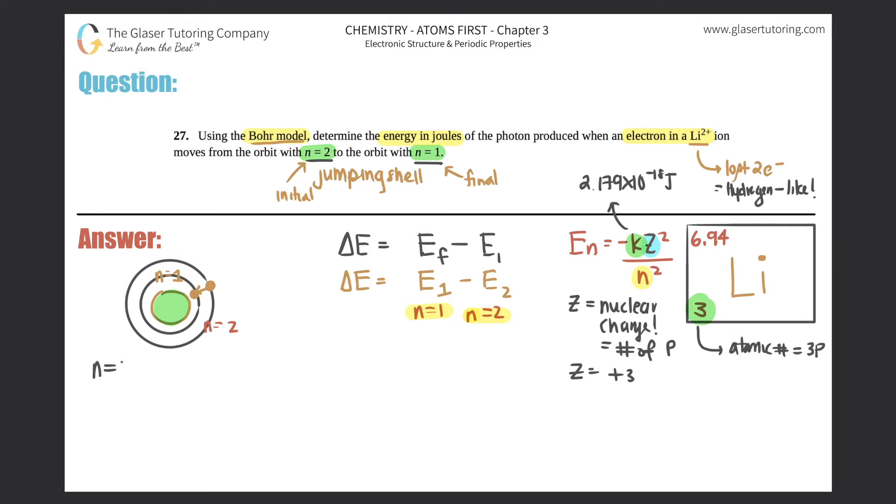And if the atomic number was 3 for lithium, that means that it had 3 protons. So the z for lithium would be a plus 3 every single time. And then the last step is the n. Now it's going to change because we have to do it for n equals 1 and n equals 2. So we got to do two separate formulas.